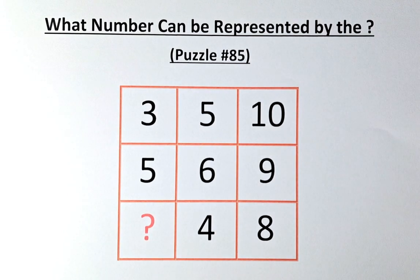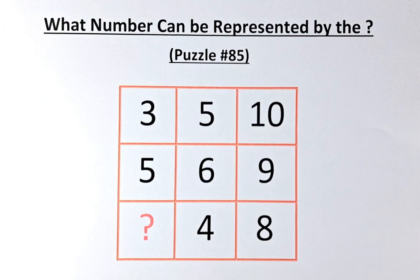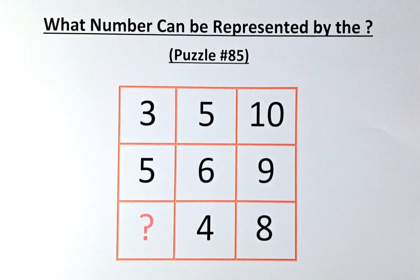The numbers in the puzzles are as follows. In the first row, we have 3, 5, and 10. In the second row, we have 5, 6, and 9. And in the final row, we have a question mark, 4, and 8.